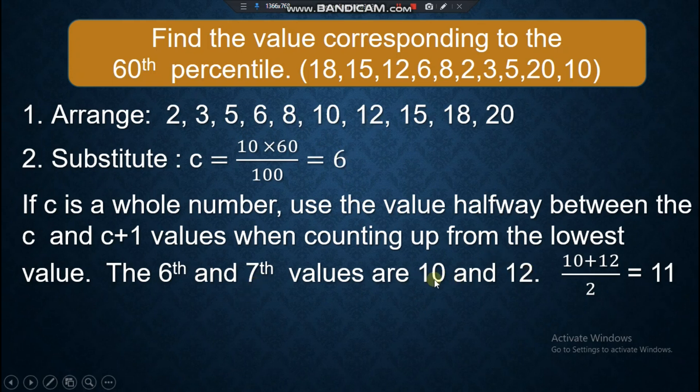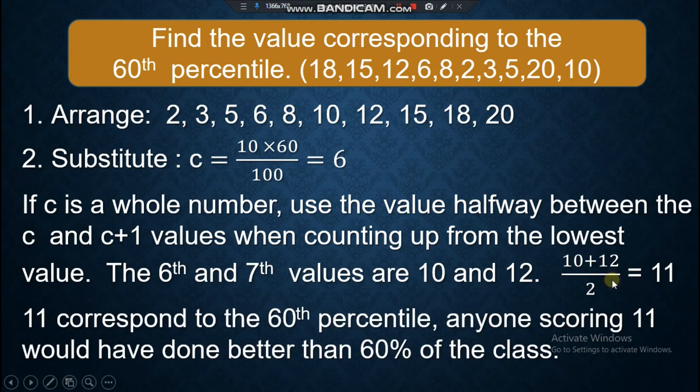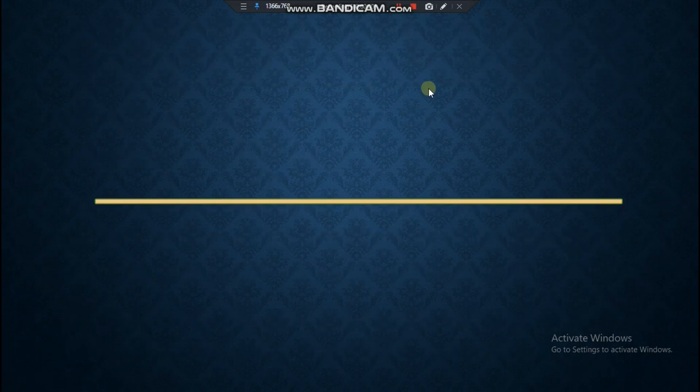You're going to get halfway. 10 plus 12 divide by 2, which is 11. So 11 corresponds to the 60th percentile. Anyone scoring 11 would have done better than 60% of the class. We are done with the Z-score or standard score and the percentile.